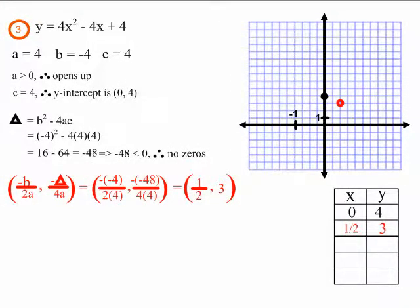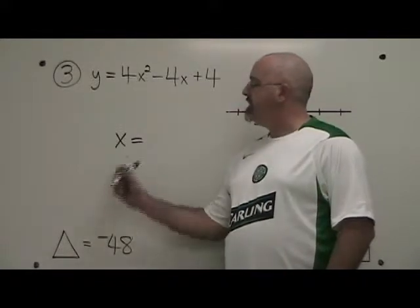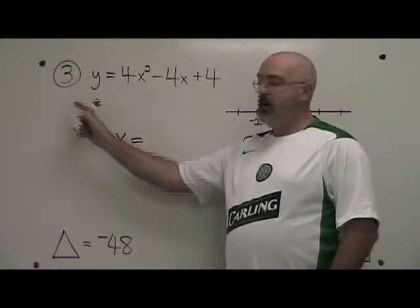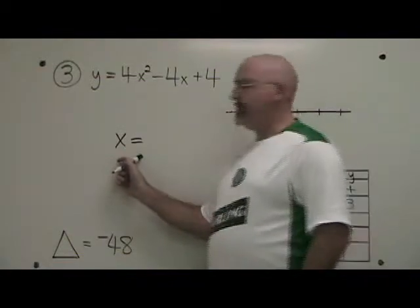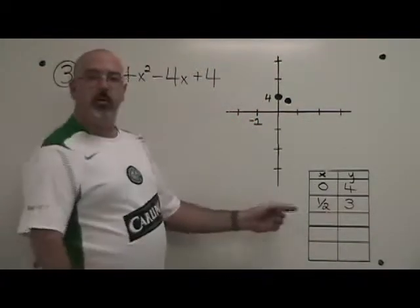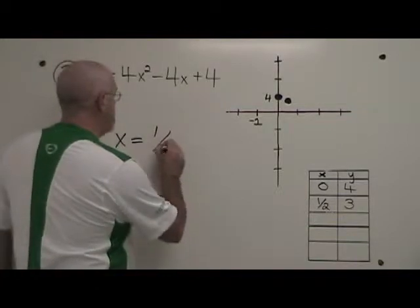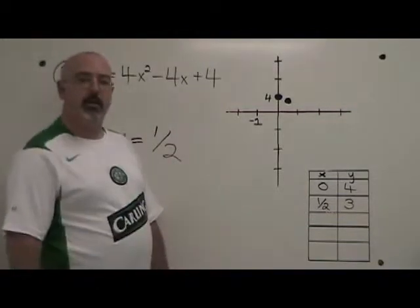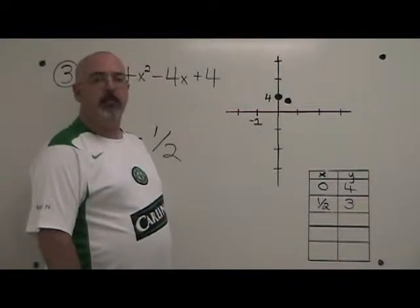This is what example two looks like after finding the equation of the axis of symmetry. This is what example three looks like before. To find the equation of the axis of symmetry for example three, all we need to know is the x coordinate of the vertex. The x coordinate of our vertex is one half, so the equation of the axis of symmetry is x equals one half. Let's put this on our graph.